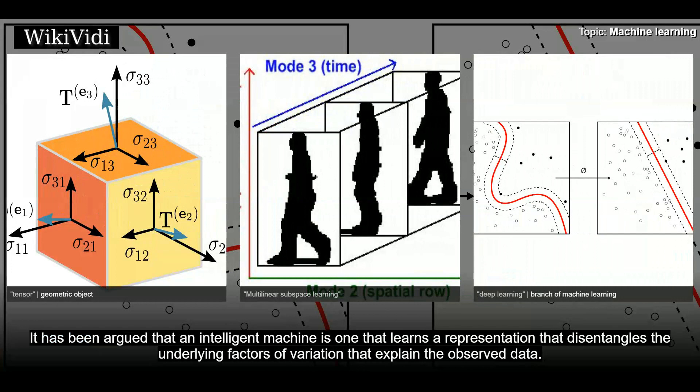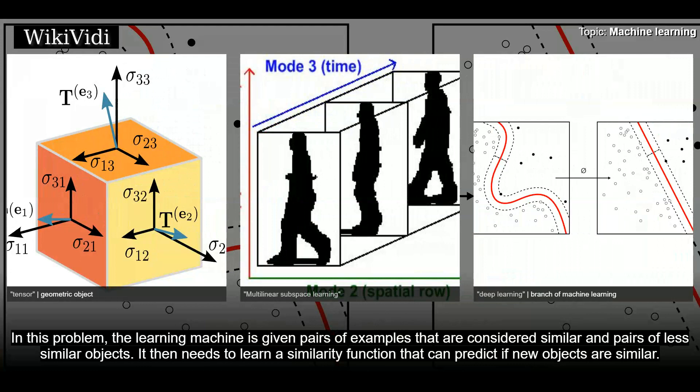Similarity and metric learning. In this problem, the learning machine is given pairs of examples that are considered similar in pairs of less similar objects. It then needs to learn a similarity function that can predict if new objects are similar. It is sometimes used in recommendation systems.